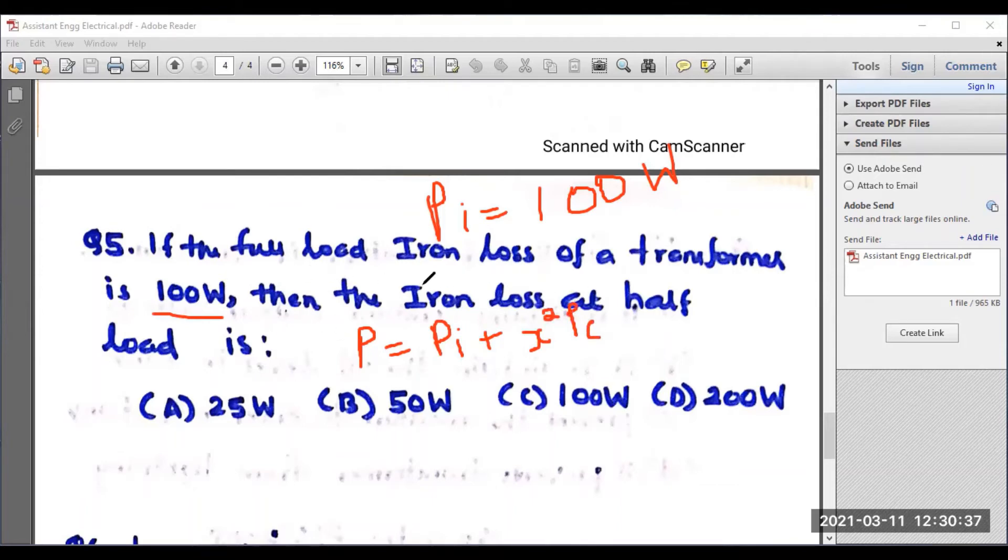The full load iron loss is given as 100 watts. Here, we are not considering the fraction of load. Therefore, the iron loss at half load is also 100 watts. I can go for option C. Because see the equation, P equals PA plus X square into PC. Here, the iron loss is not at all depending on X. X is the fraction of load. X is not depending on PA. Obviously, the right answer for this question is option C.